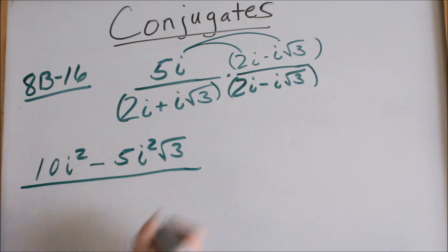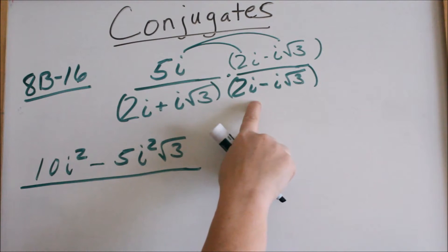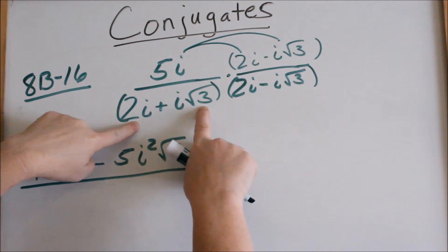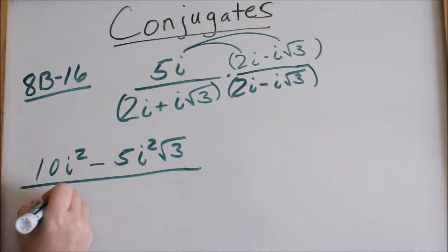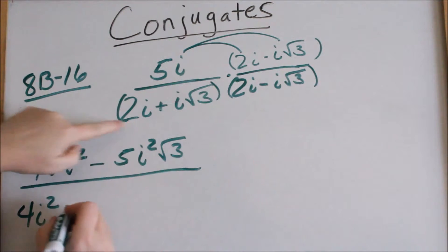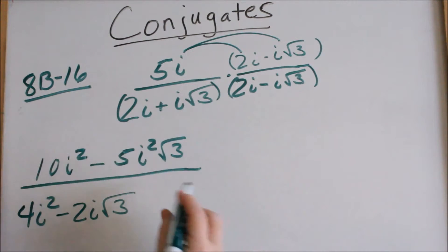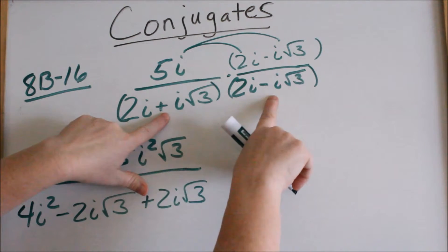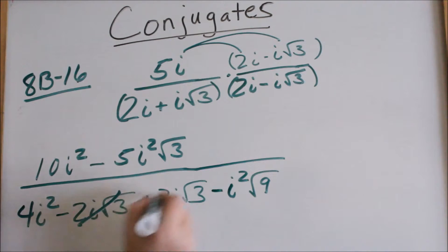Now in the denominator, I'm going to do this one the long way. When you multiply conjugates, your middle terms cancel. So basically you would square this term, square this term, and put a subtraction sign in the middle. But let's go ahead and FOIL this out: 2i times 2i is 4i squared. 2i times a negative i square root of 3 will be negative 2i squared square root of 3. Then positive 2i square root of 3 — because those middle terms should cancel. Now you have a positive times a negative, which is negative i squared square root of 9.